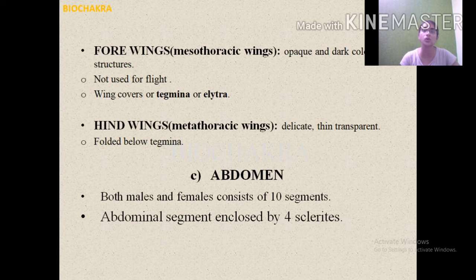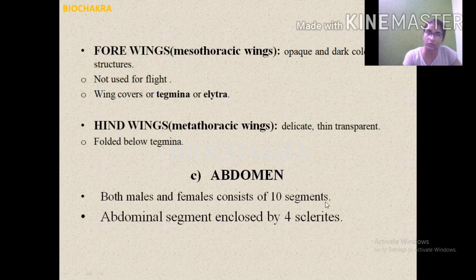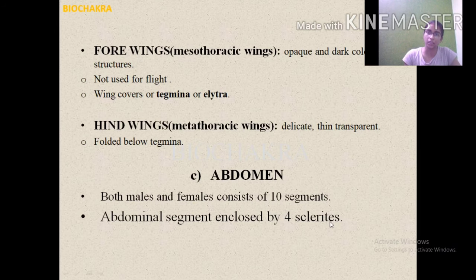Each abdominal segment is covered by 4 sclerites: the dorsal tergum, the ventral sternum, and two lateral pleura. So the abdomen is the third body division — 10 segments in the adult, 11 in the embryo — and each segment is enclosed by 4 sclerites: tergum, sternum, and two pleura.